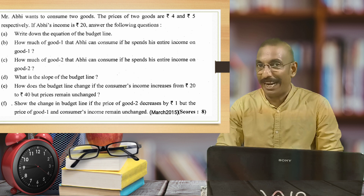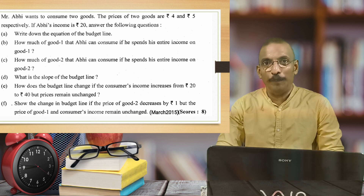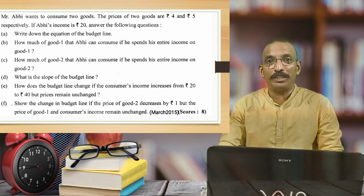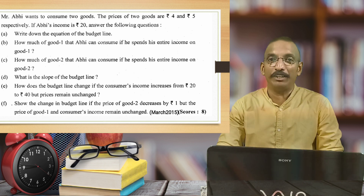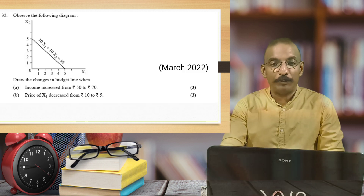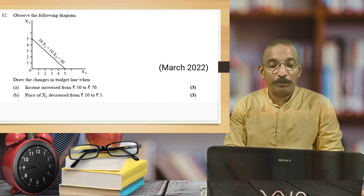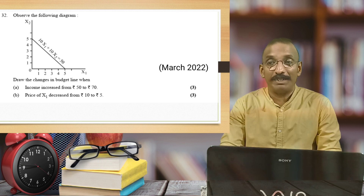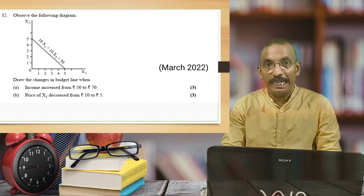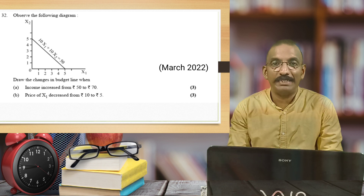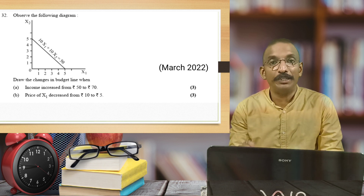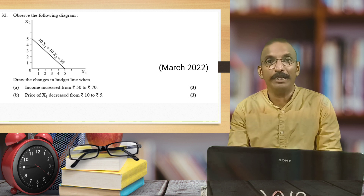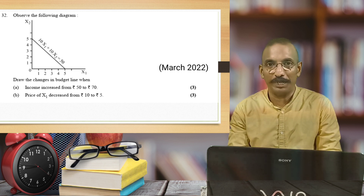This is the pattern of questions and you will find it very easy to answer. The next pattern involves drawing changes in the budget line — for example, when income increases from 50 to 70, or when price decreases. If you have the explanation of the topic, just go through that thoroughly.